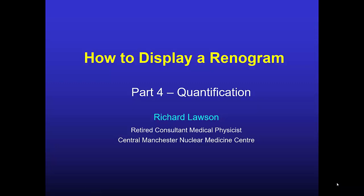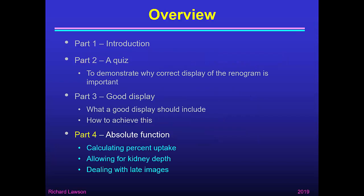This is the last part of my talk about how to display a renogram. In part 1 I gave an introduction, and in part 2 I presented a quiz with some questions that hopefully demonstrated why correct display of the renogram is important. In part 3 I talked about what a good display should include and showed how to achieve this. So now in part 4 I'm going to talk about absolute function, how to calculate percent uptake, how to allow for kidney depth, and how to deal with late images.